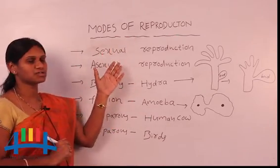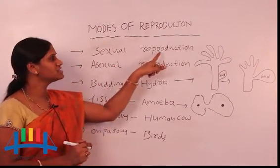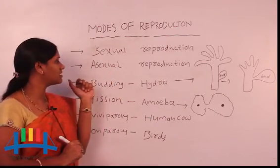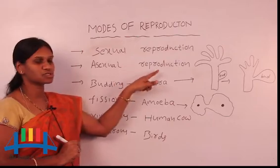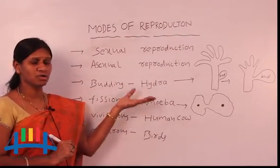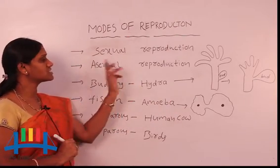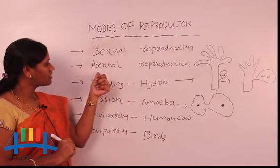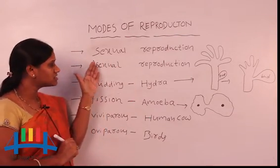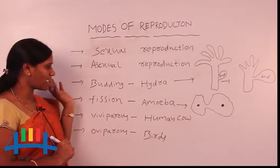So here in reproduction also: commonly higher animals and higher plants are involved in sexual reproduction, but lower animals and lower plants are involved in asexual reproduction. These types — belonging to lower animals and lower plants — are also known as asexual reproduction, and one more name for it is vegetative propagation. These all occur only in lower animals and lower plants.